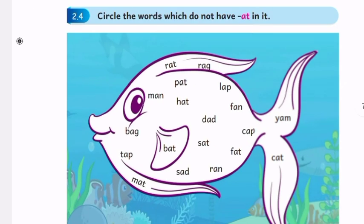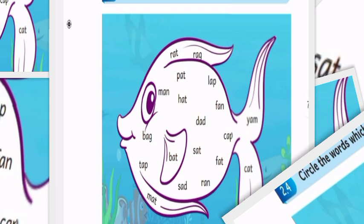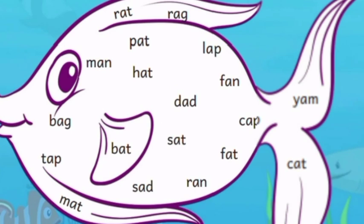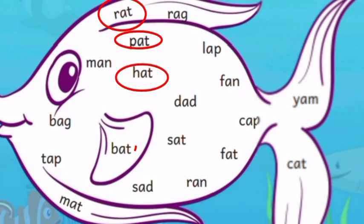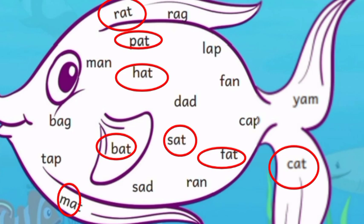See the next exercise, 2.4: Circle the words which do not have 'at' in it. Circle words with this sound 'at': rat, pat, hat, bat, mat, sat, fat, cat.